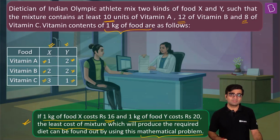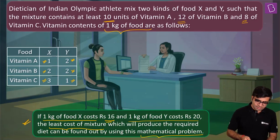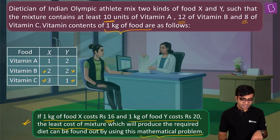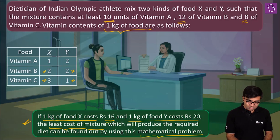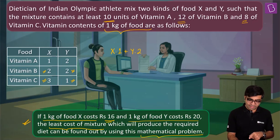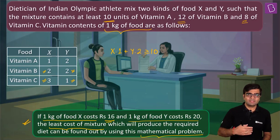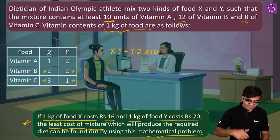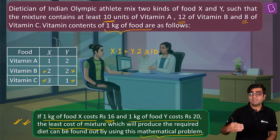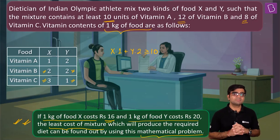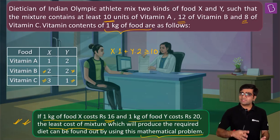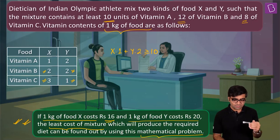For example, vitamin A content in food x is 1 unit, so if I take x amount of food x and y amount of food y, the vitamin A content is x·1 + y·2, and this must be at least 10 units: x + 2y ≥ 10. Similarly we form inequalities for vitamin B and vitamin C, then find the least cost of the mixture for the athlete's diet. This is just an example for reference — we are not solving it fully right now — just to get used to how the question works.